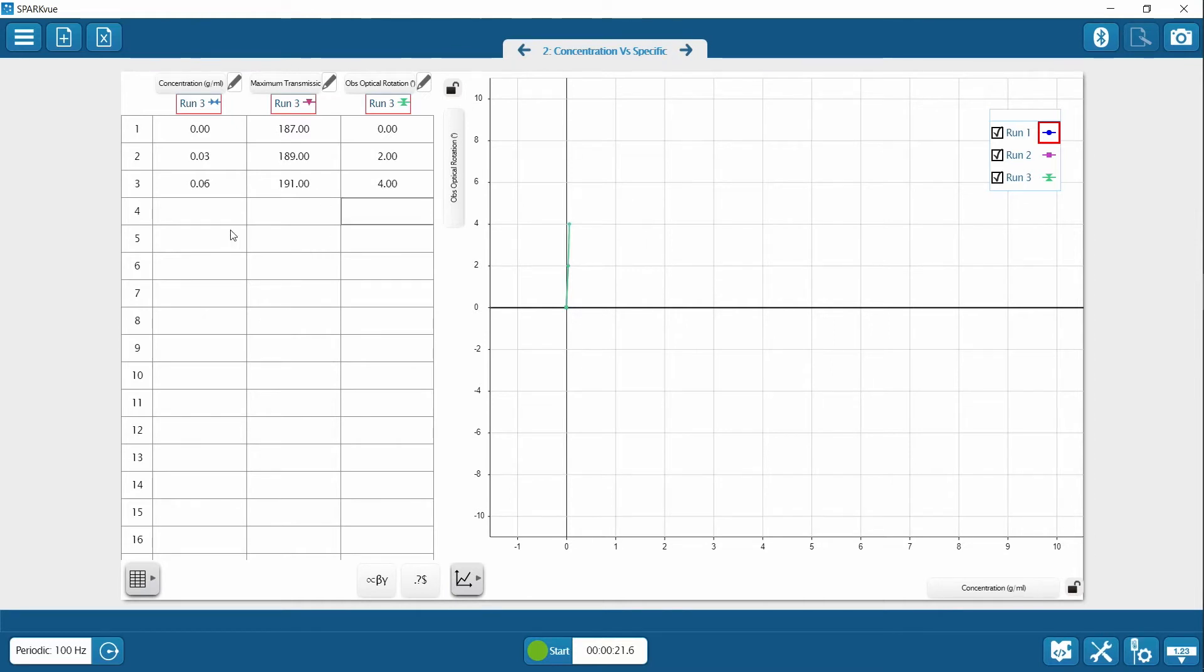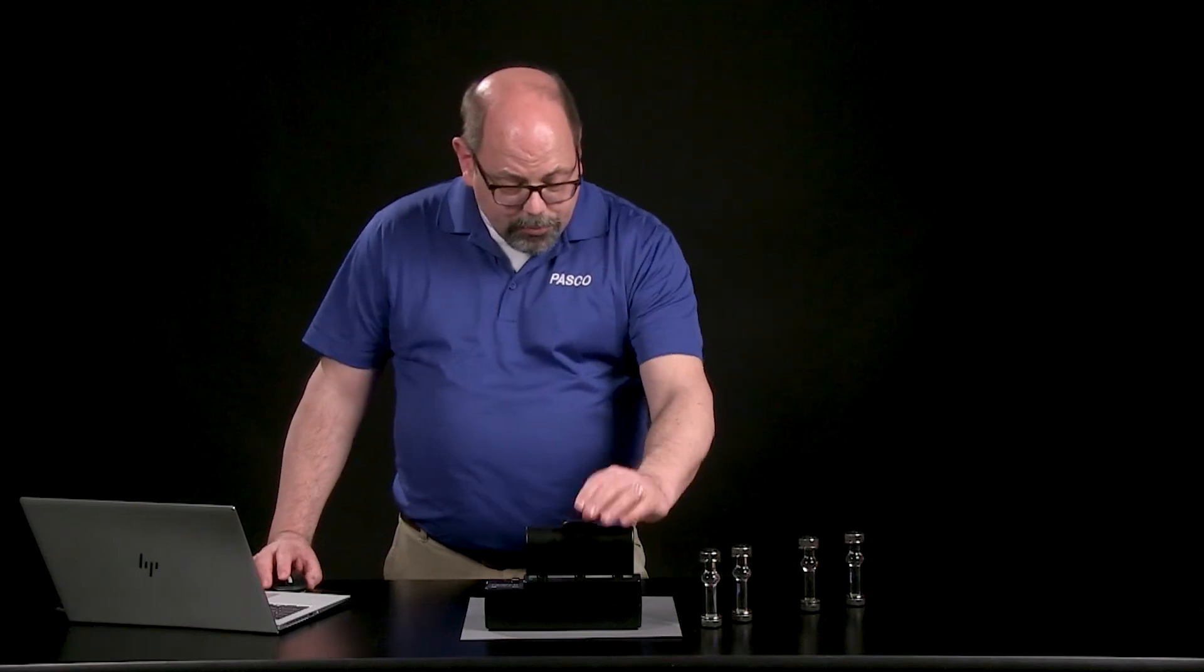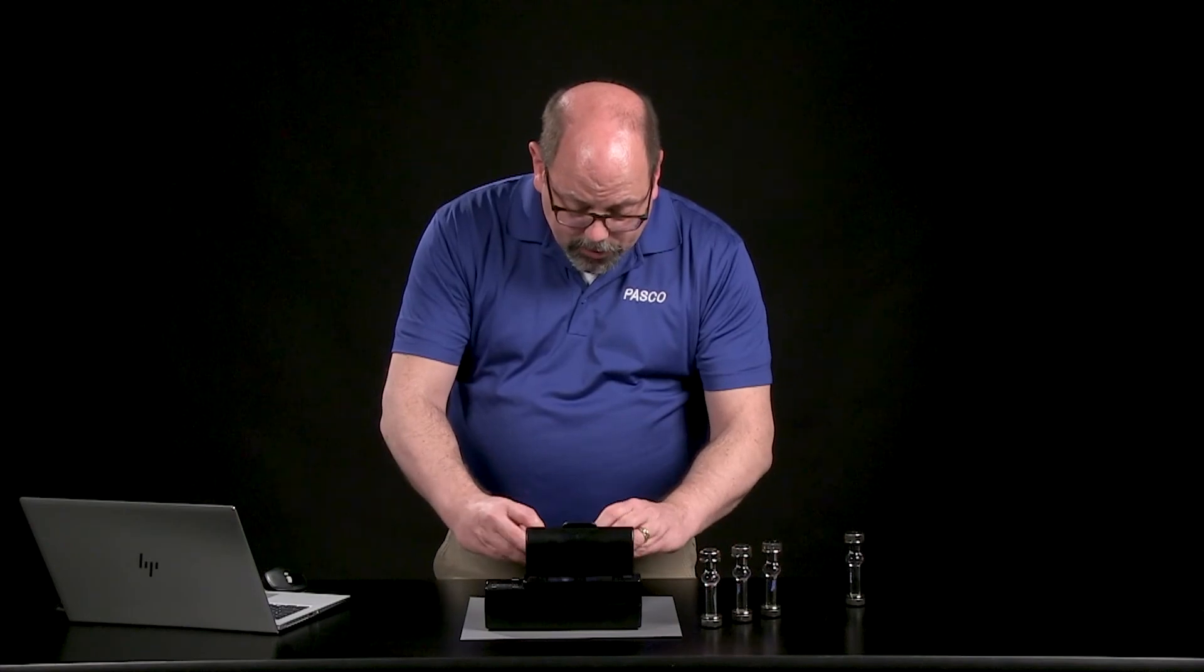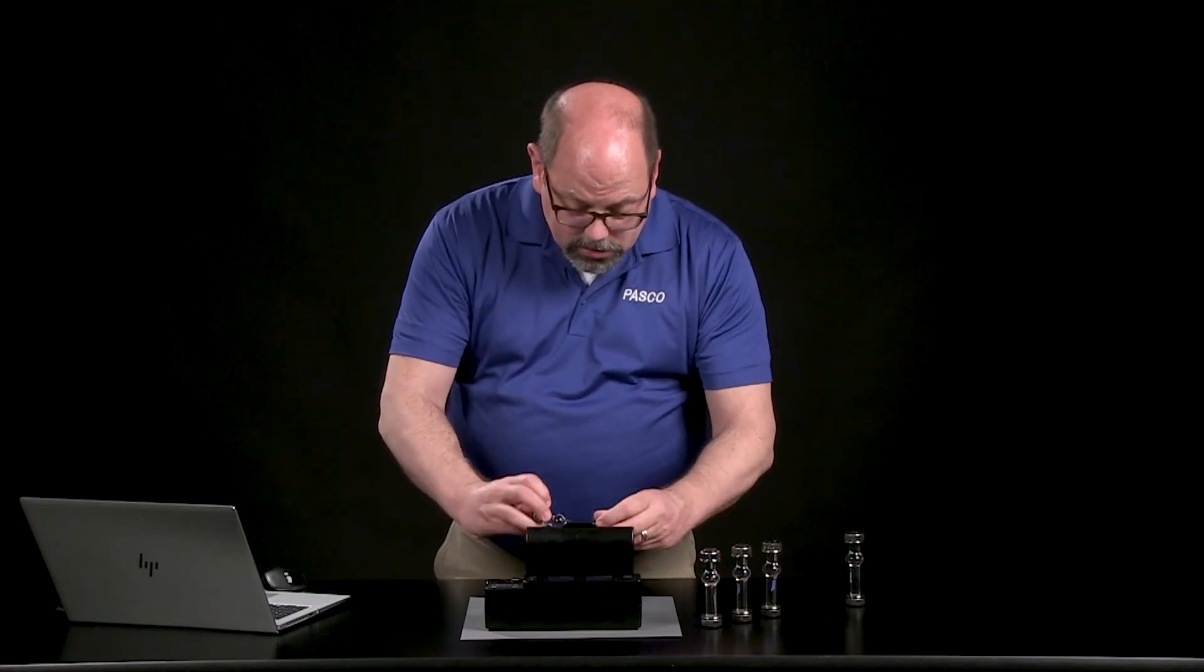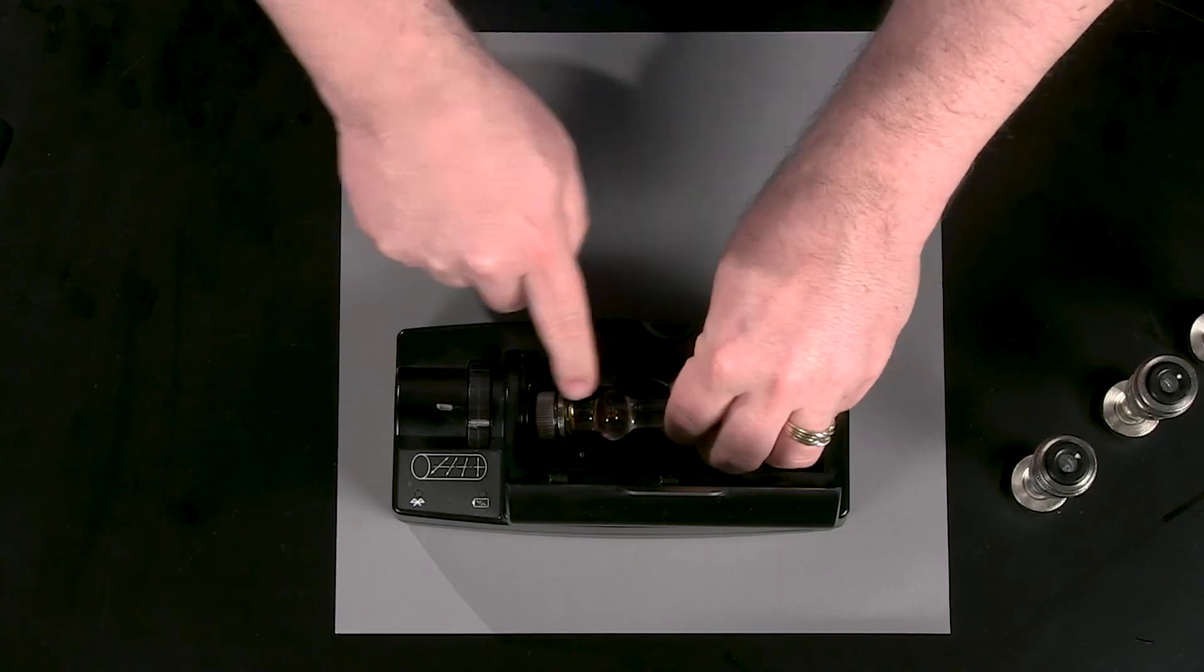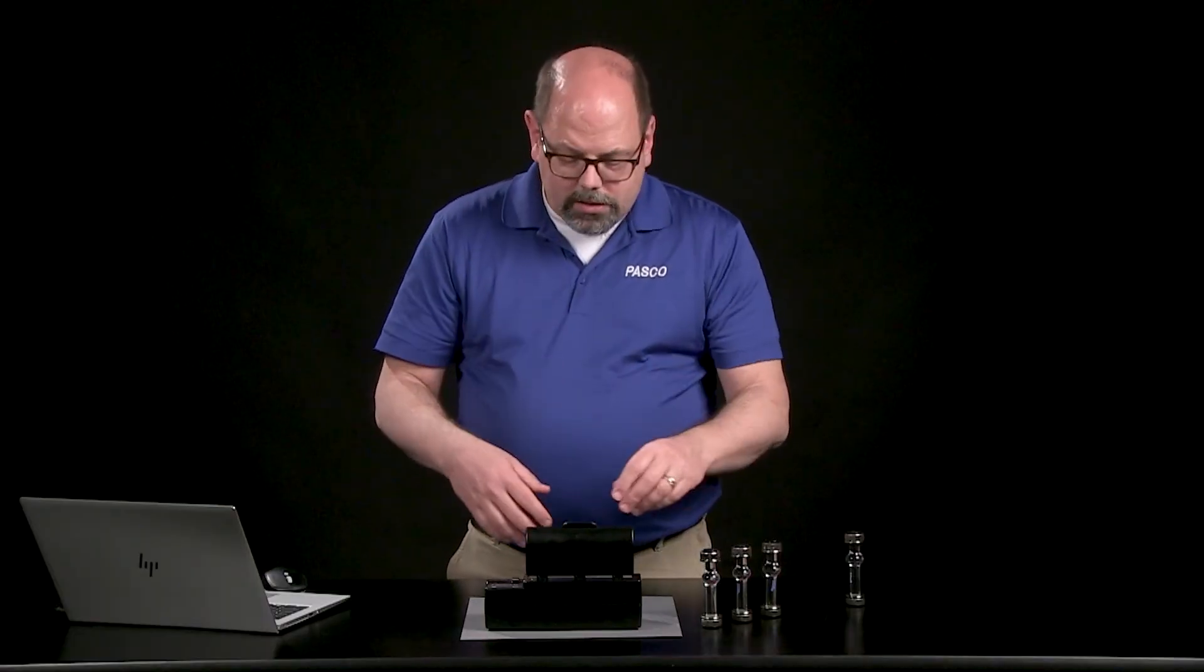All right, and we'll go for the last one to get our curve. Let's run a 10% solution. Again, these are going to be very similar in process to many of the labs. We're going to ask you to do this. This doesn't have a mark on here with the manufacturers, so I made a little mark on there myself with a little red mark so I can orient it the same way all the time.